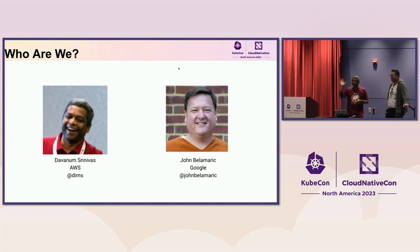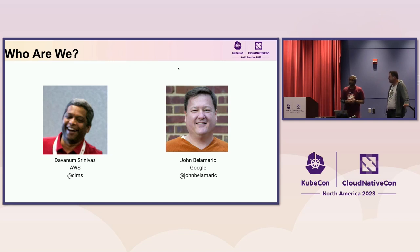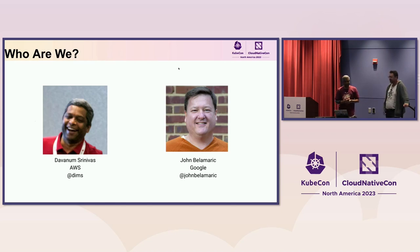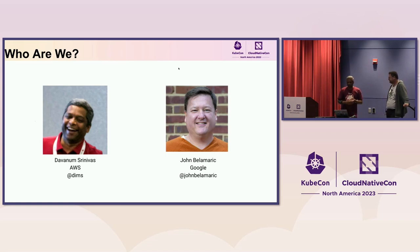My nickname is Dims — you can call me Dims. I'm on GitHub and Twitter as Dims everywhere. I'm John, and Dims and I are two-thirds of the SIG Architecture co-chairs. John is from Google; I work for AWS currently.